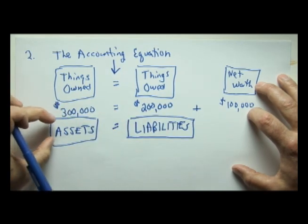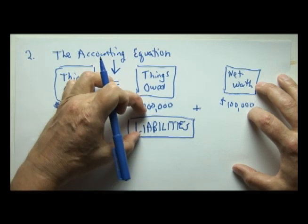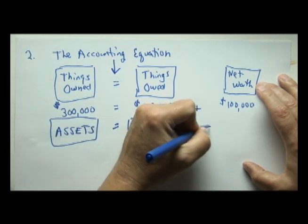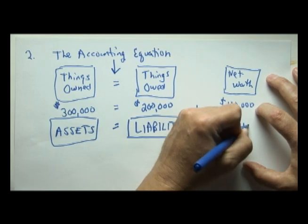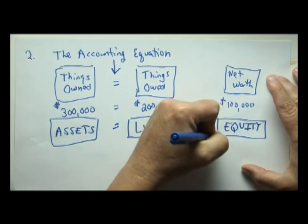The difference between what an entity owns on the left will always equal what it owes, plus its, as I mentioned a moment ago, another name for net worth is called equity, or owner's equity.